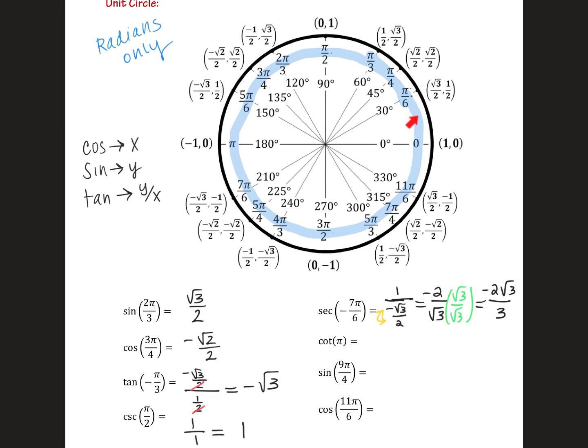Cotangent of π. So that's on the x-axis at this point, (-1, 0). Cotangent is x divided by y. So x divided by y, dividing by 0 is undefined. So we'll just say that is undefined or does not exist.